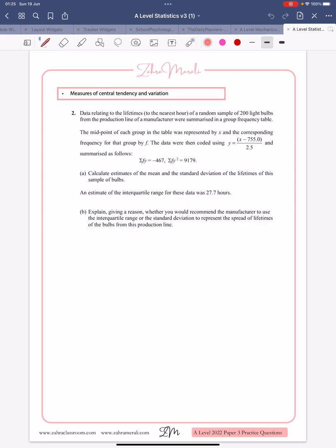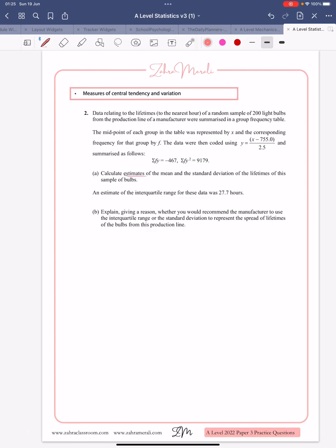So let's have a look at this question. We're given some information, we're told it's been coded, and we want to find out an estimate for the mean and the standard deviation. In your formula books, you're given your formulas, but you should know that at least the mean is going to be your sum of everything, which is what this represents, divided by the total amount.